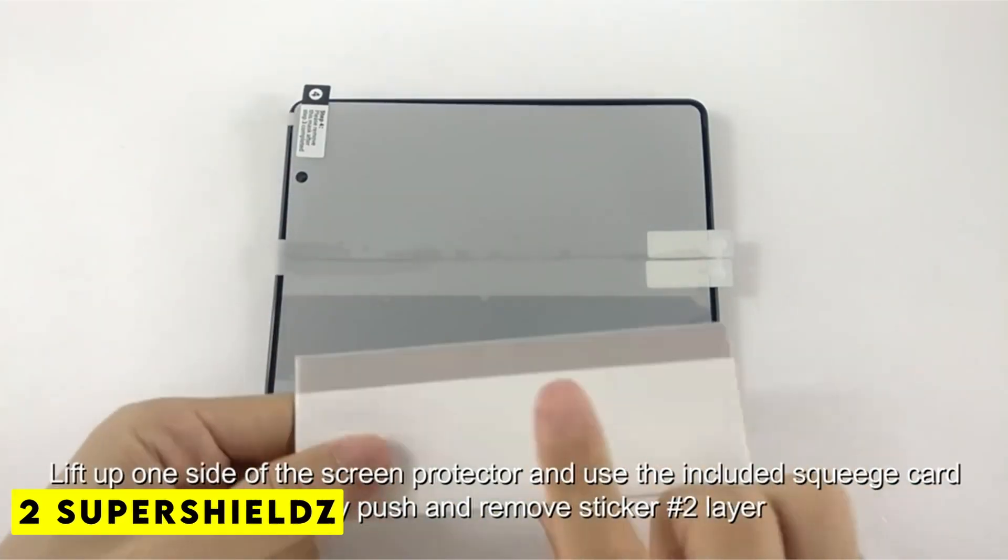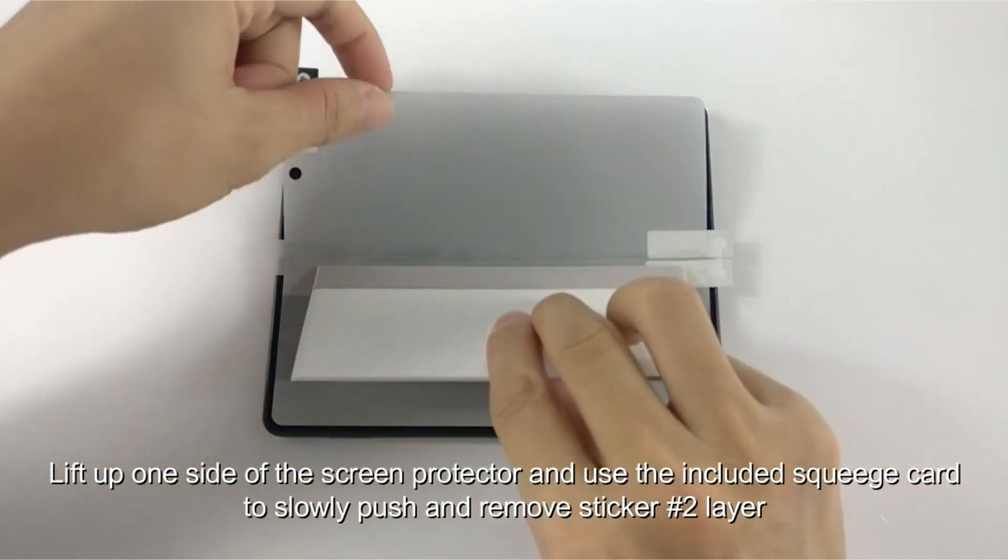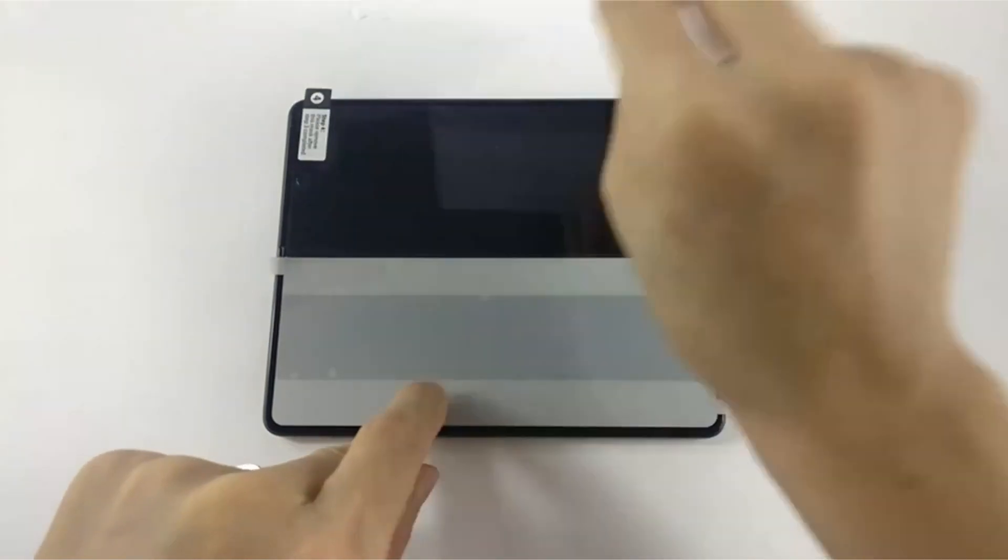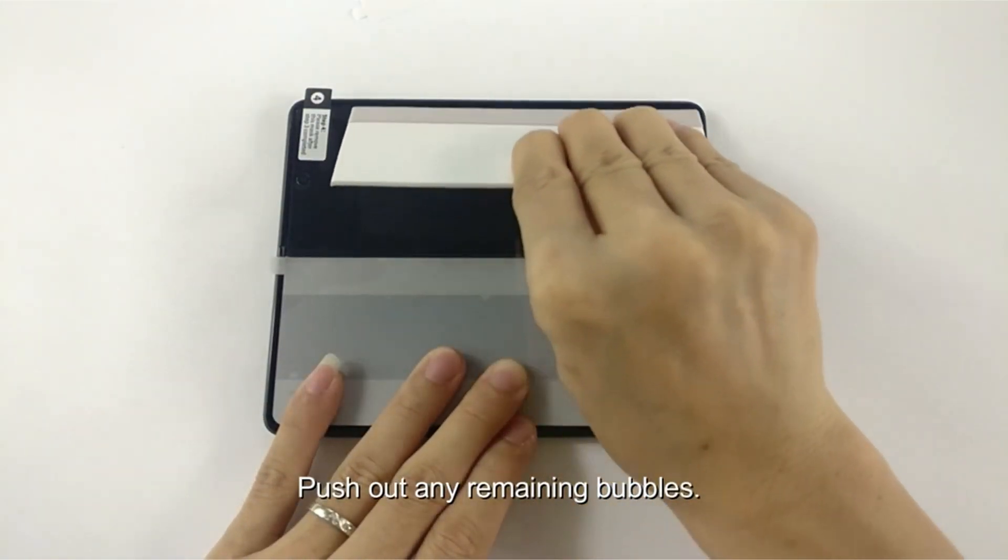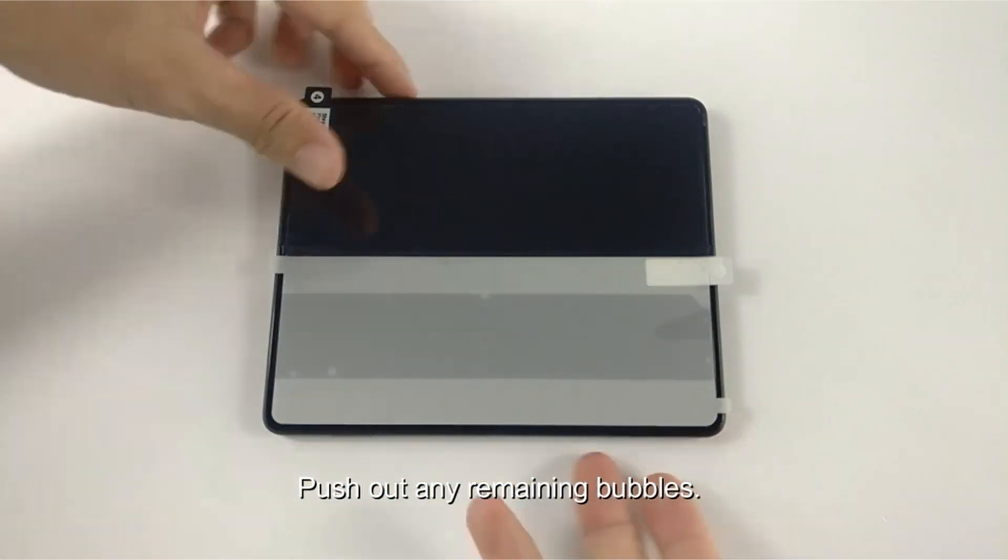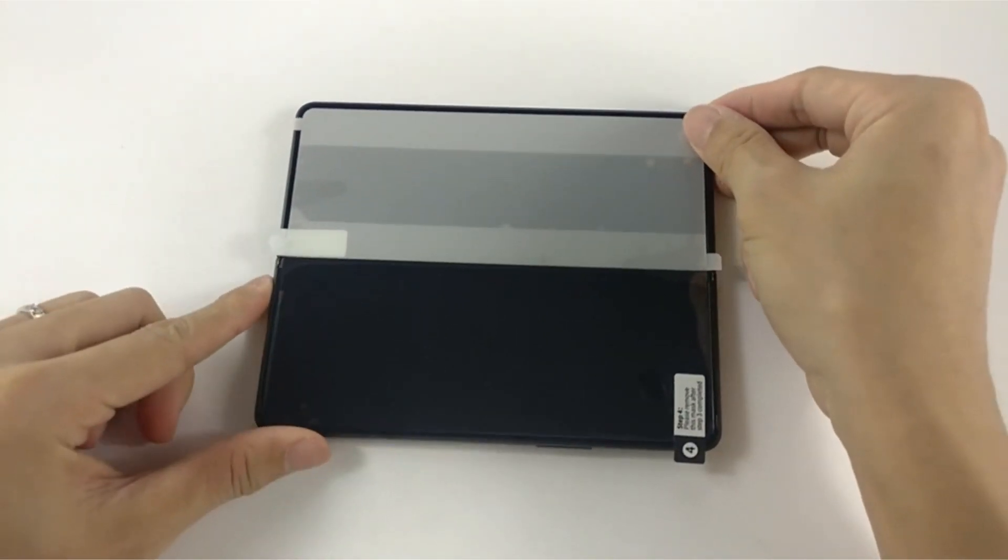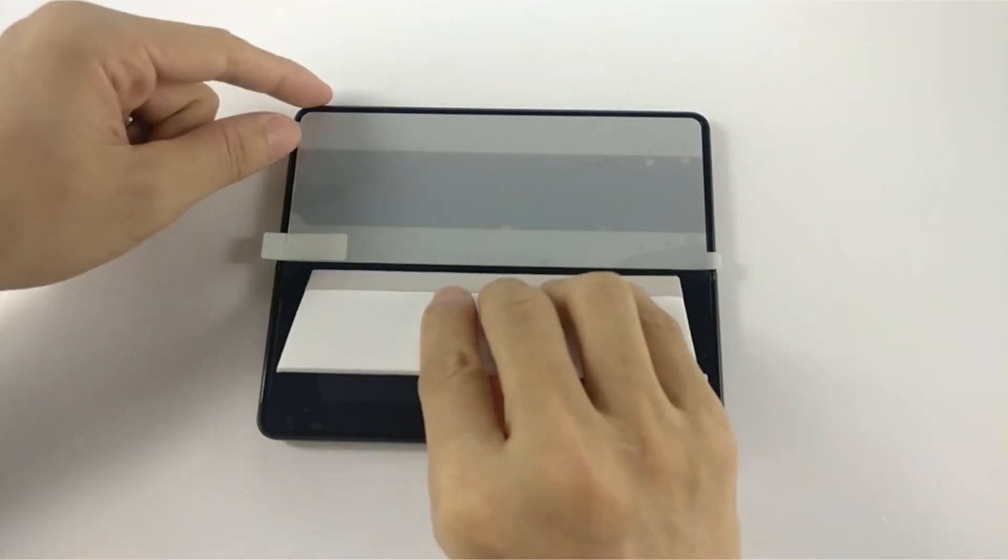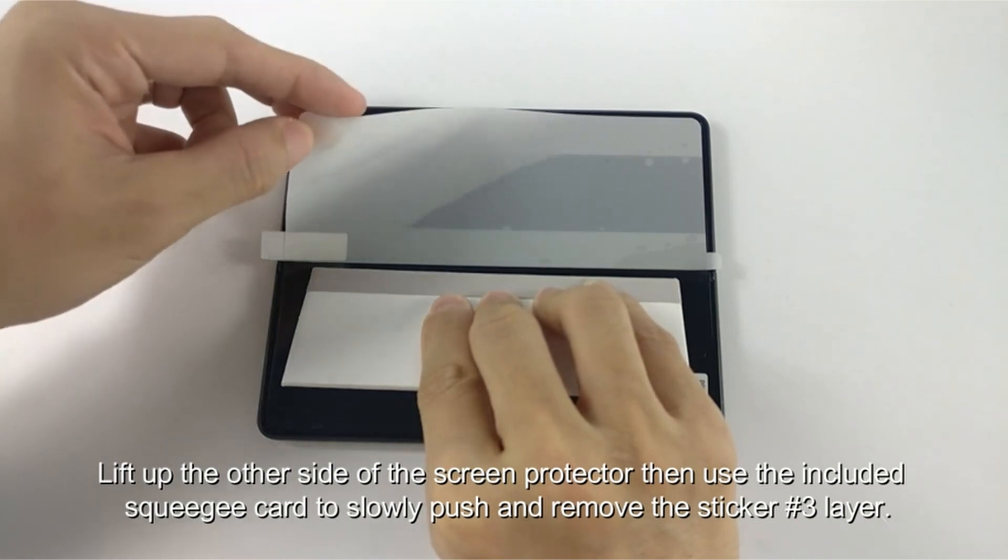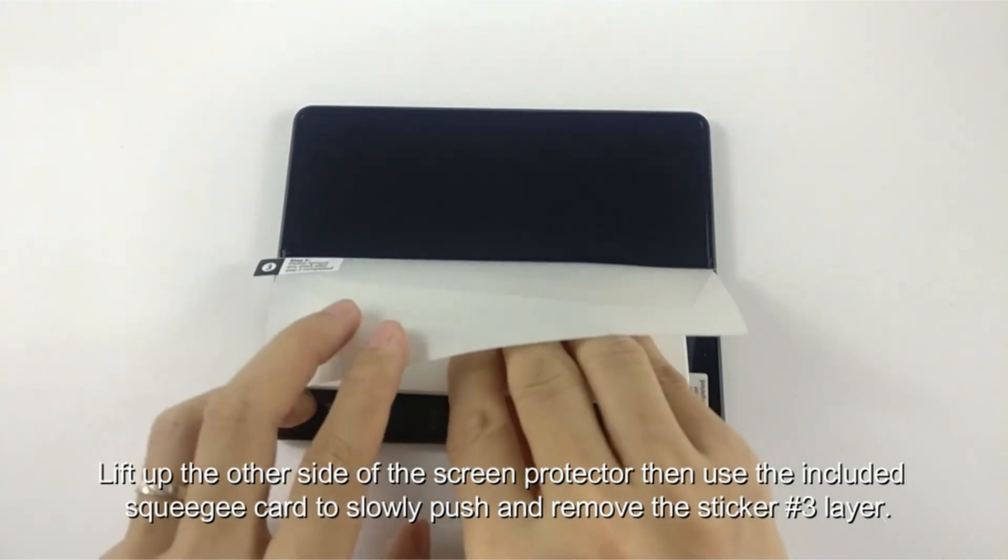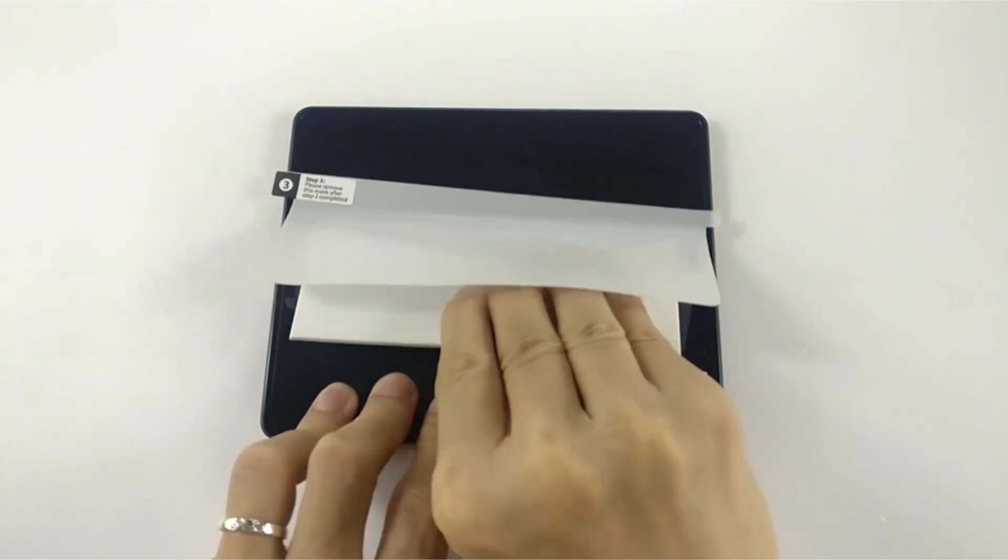Number 2: Supershields. TPU material is used to make the Supershields 2-pack screen protector for simple installation. With no residue left behind after removal, this high-definition film guarantees maximum resolution and transparency. In order to shield your foldable phone from scuffs, dust, and scratches, it gives actual touch sensitivity for a realistic feel and pinpoint precision.